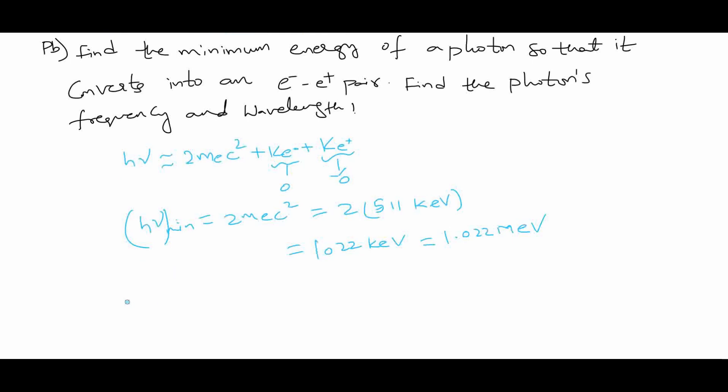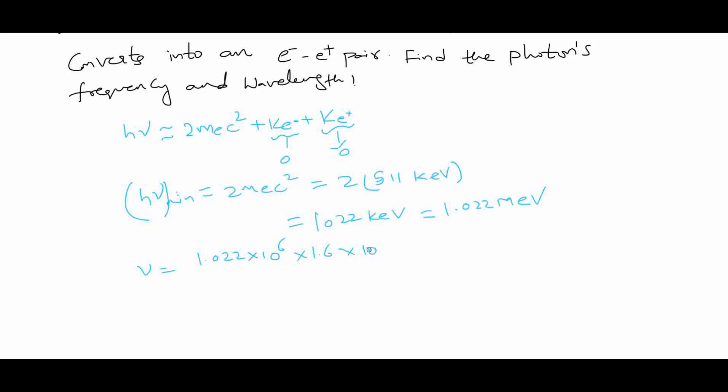Now you can find the frequency, that is the corresponding photon frequency nu equals this 1.022 times 10^6 times 1.6 times 10^-19 joules divided by h, and you will get frequency here. Then wavelength, you see that the speed of light will come, so you may calculate these and write in comments.